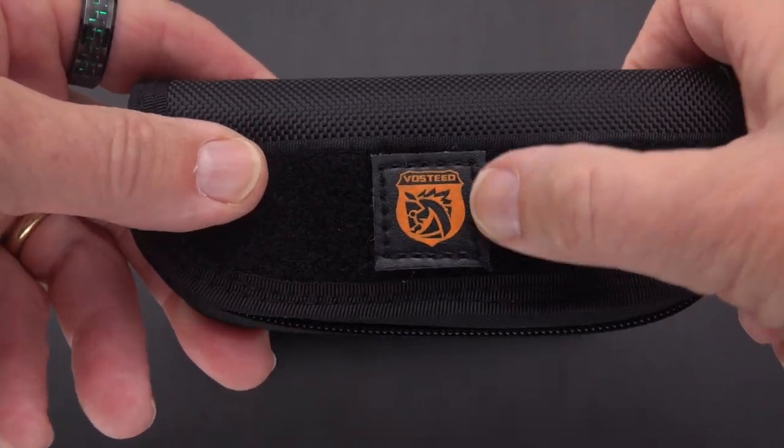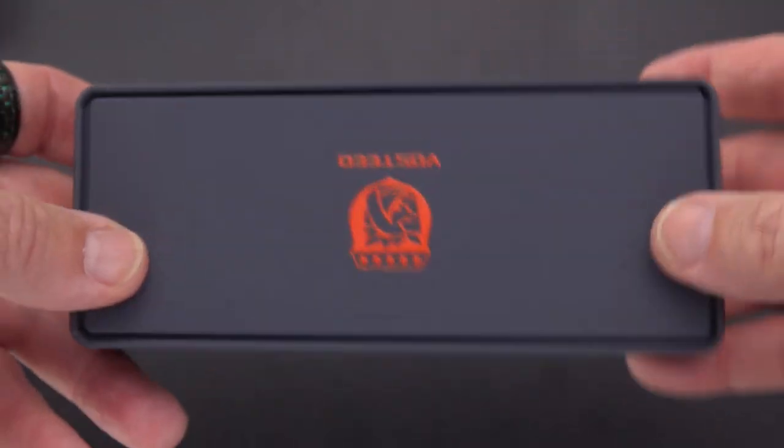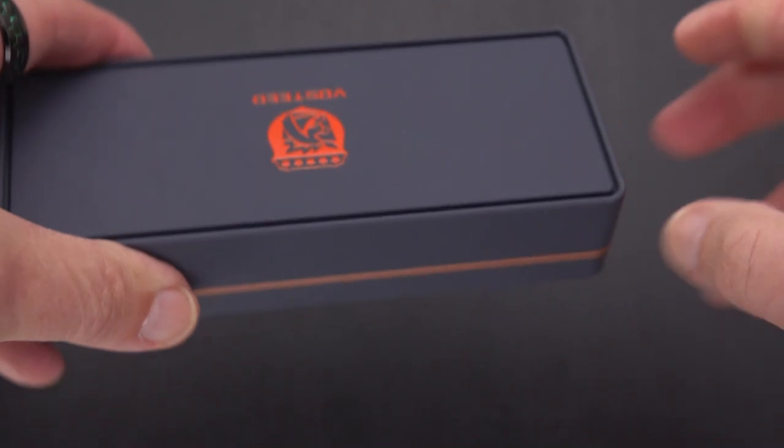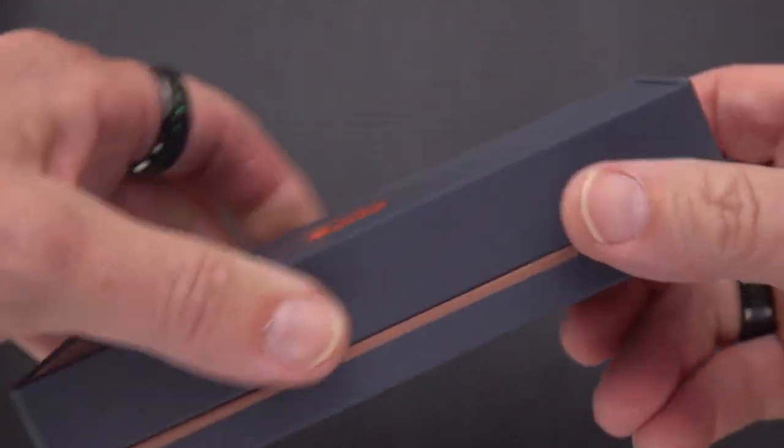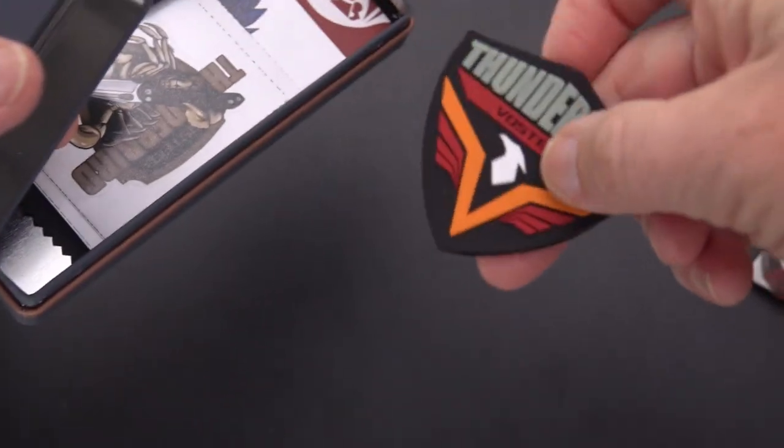You got some velcro there in case you want to add some additional patches, but the Vasteed one is sewn in. Vasteed always gives you, no matter what the price point is, this with their knives—this aluminum tin.